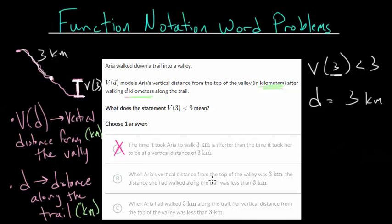For B, when Aria's vertical distance from the top of the valley was 3 kilometers, the distance she had walked along the trail was less than 3 kilometers. So this is kind of switching what we had. This is saying that the vertical distance V(D) equals 3, and D, the distance she had walked along the trail was less than 3 kilometers, so D would be less than 3. But that's not what we have here. We essentially have the opposite of that. D is 3, and V(3) is less than 3. So that's not right.